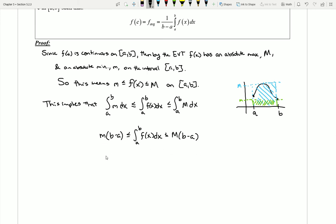But now I can see that since b minus a is a positive amount, I could divide everything through here by b minus a. Notice here if I divide everything through, I'm going to get this integral, the area under the curve, times one over b minus a.